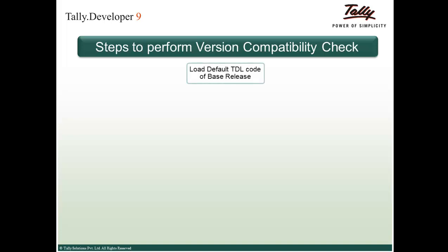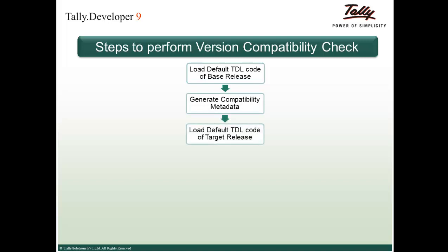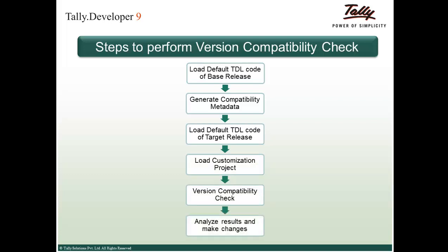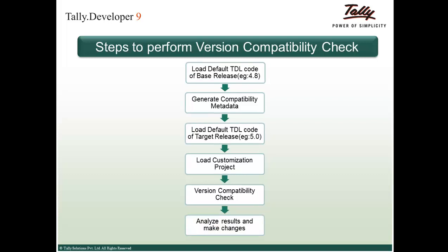Now let us look at the steps involved to perform version compatibility check. The first step is to load the default TDL code of the base release — that is the release up to which the customization is compatible. Next, generate the compatibility metadata, then load the default TDL code of the target release, load the customization project, perform the version compatibility check, and finally analyze the results and make necessary changes. In our example, the base release is 4.8 and the target release is 5.0.